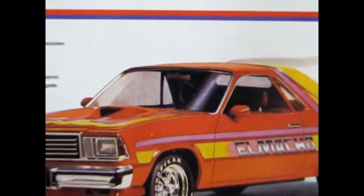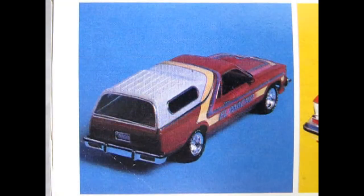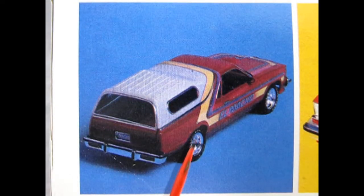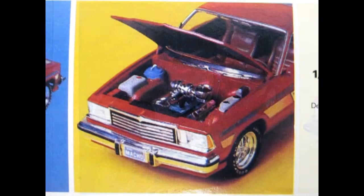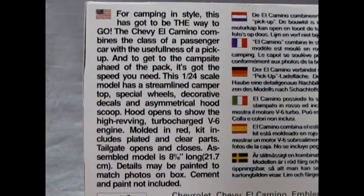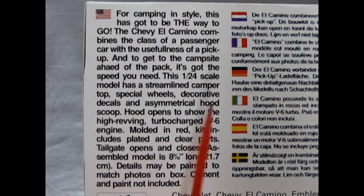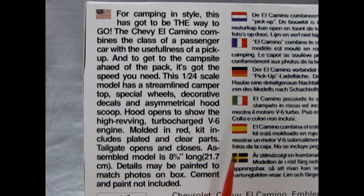Now we go all the way back to 1979 to our Chevrolet showroom where we get to take a look at the El Camino Camper. This is a Monogram kit in 1:25th scale. The side of the box shows a rear three-quarter view of the camper as well as the front with the hood up to show the engine. We also have this great write-up on the side of the box in English telling us more about the El Camino Camper as well as in many other different languages.